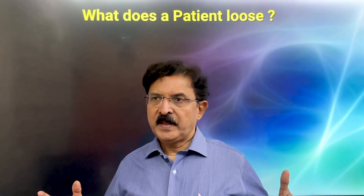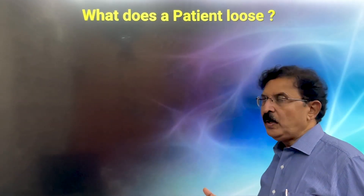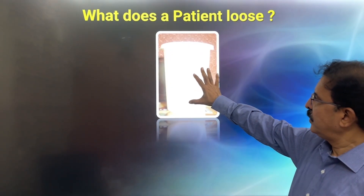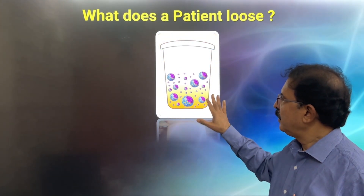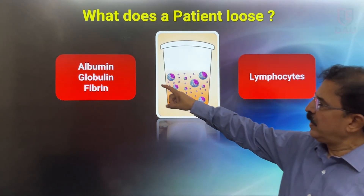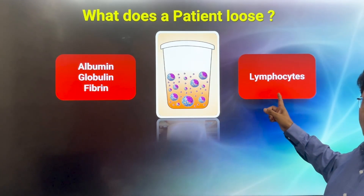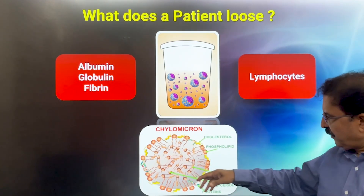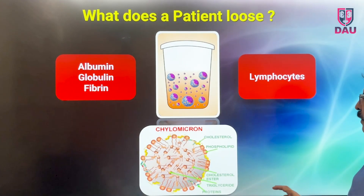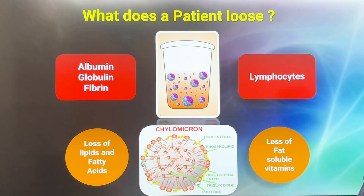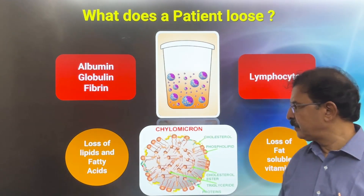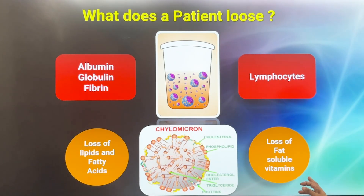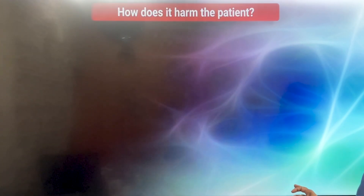When a patient has attacks of chyluria, depending upon the duration, the patient shows various effects. But first, let us see what the patient loses when passing chyle through urine. The urine looks like milk and contains albumin, globulin, fibrin, lots of lymphocytes, and plenty of chylomicrons — which themselves contain cholesterol, phospholipids, triglycerides, and proteins. So the patient is having loss of lipids, fatty acids, and fat-soluble vitamins.